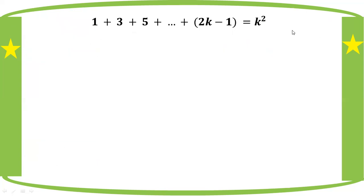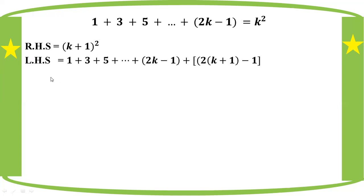We have the inductive hypothesis. We need to show LHS equals RHS for n equal to k plus 1. Using n equal to k, we substitute into the expression. For n equal to k plus 1, the last term becomes 2(k plus 1) minus 1, which equals 2k plus 2 minus 1.